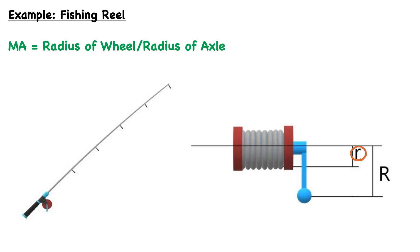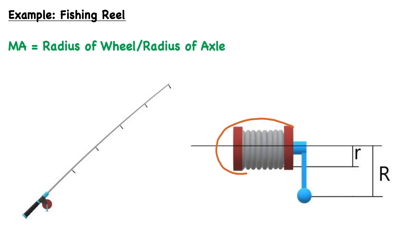The greater the wheel is with respect to the axle, the greater the mechanical advantage. For example, if we wanted to increase the mechanical advantage of this reel, we could increase the length or radius of the handle, or decrease the radius of the reel. It's about minimizing the radius of the axle with respect to maximizing the radius of the wheel.